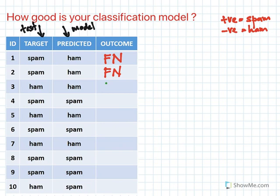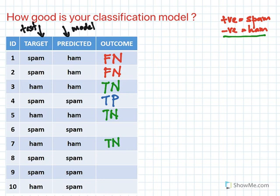When both target and prediction are ham, that is true negative — ham is negative. When both are spam, that is true positive — spam is positive. And this last one is actually false, and it is false positive.